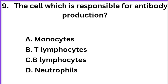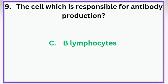The cell which is responsible for antibody production? Option A: Monocyte, Option B: T lymphocyte, Option C: B lymphocyte, Option D: Neutrophil. The correct answer is Option C — B lymphocytes. B lymphocytes are responsible for antibody production.